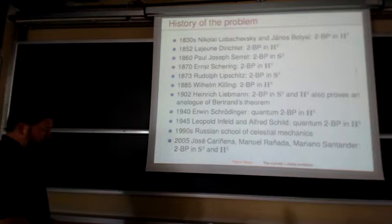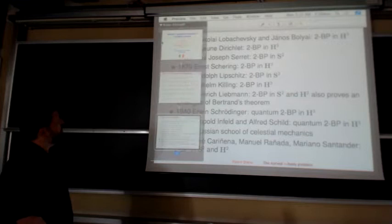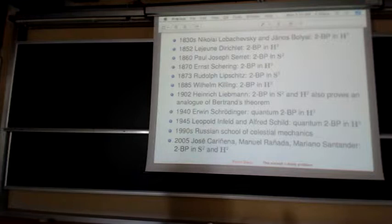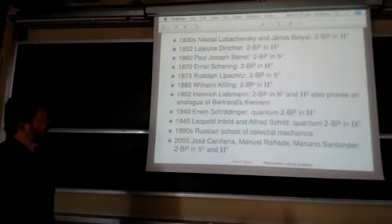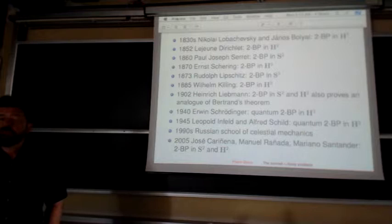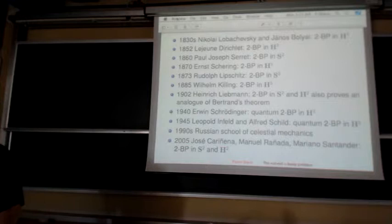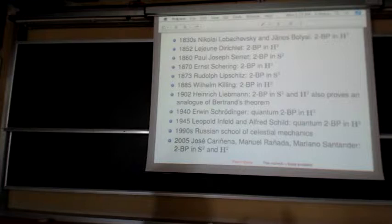Also, Infeld and Schild — Infeld was Polish, has a book with Einstein, and was a postdoc of Einstein in Princeton, then a professor at the University of Toronto. Schild was one of his students. Then the Russian school of celestial mechanics worked in the 1990s on the two-body problem, and I learned about it from a paper of 2005, which I read in 2008, by three Spanish mathematicians: José Cariñena, Manuel Rañada, and Mariano Santander.